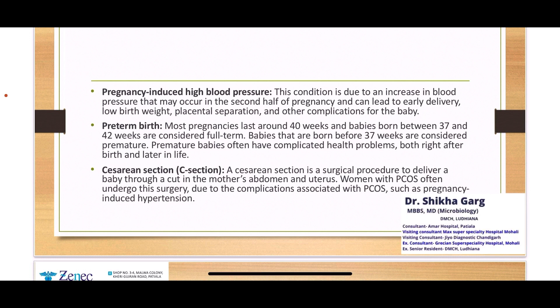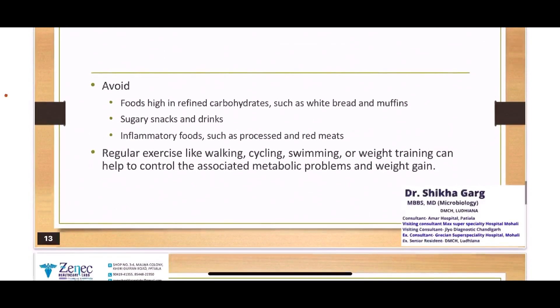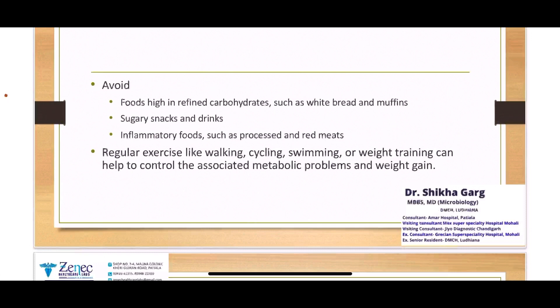Because of many complications, a C-section is usually done, meaning surgical intervention is also needed. For lifestyle tips in PCOS: first, reduce weight if you have excessive weight or obesity, as it can reduce all PCOS symptoms. Second, make diet changes — take more protein-rich food, high fiber food with multi-nutrients and good nutrition, and avoid high refined carbs and sugars. Regular exercising is a must — walking, cycling, swimming, or weight training — to help control metabolic problems, weight gain, and balance hormones, thus reducing PCOS symptoms.